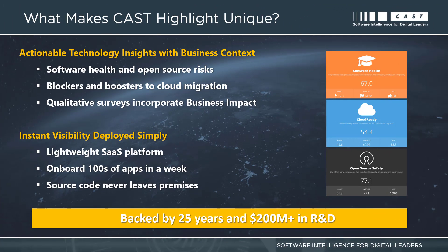There are a couple of ways that CAST Highlight is truly unique. First, it integrates actionable technology insights with business context. These insights include software health, open source risks, and blockers and boosters to cloud migration. There's also a qualitative survey component built into the platform for capturing information such as business impact, so users can cross objective metrics from source code analysis with qualitative information like the business impact of applications.